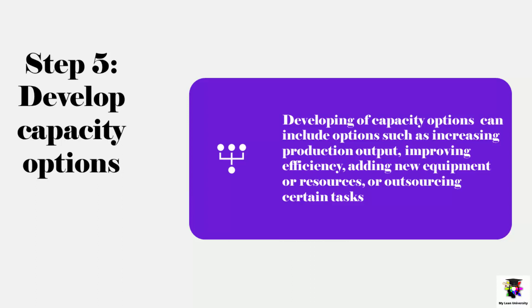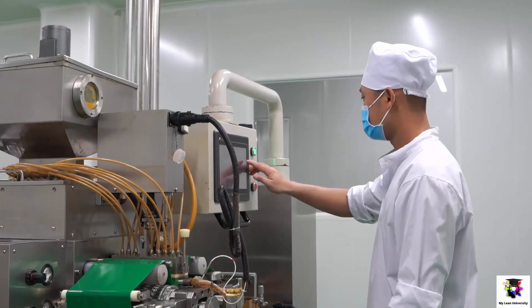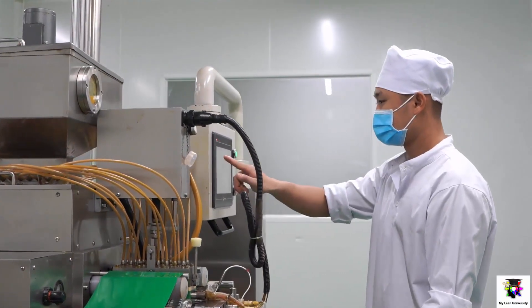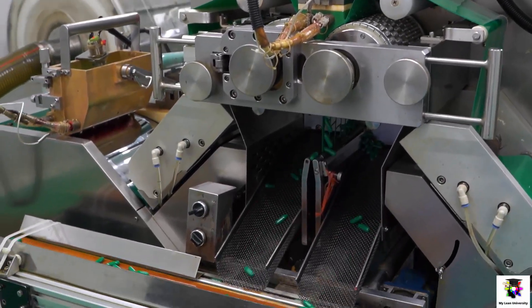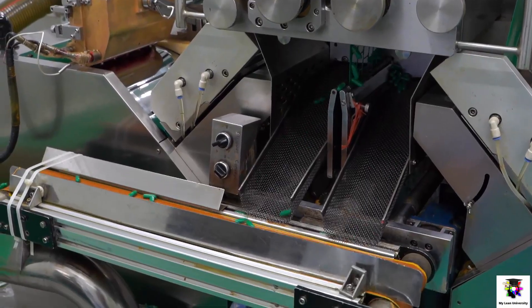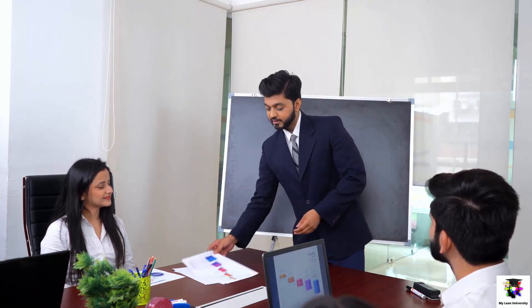The fifth step is to develop capacity options. With the capacity requirements identified, the next step is to develop options for meeting those requirements. This can include options such as increasing production output, improving efficiency, adding new equipment or resources, or outsourcing certain tasks. For example, a manufacturing company may consider increasing the number of shifts, investing in new machinery, or outsourcing certain tasks to third parties. A service-based company may consider hiring additional staff, improving efficiency through process improvements, or outsourcing certain tasks.